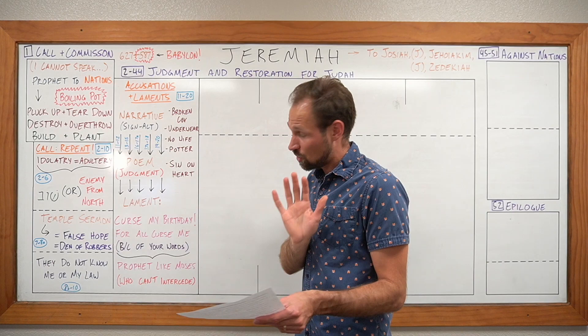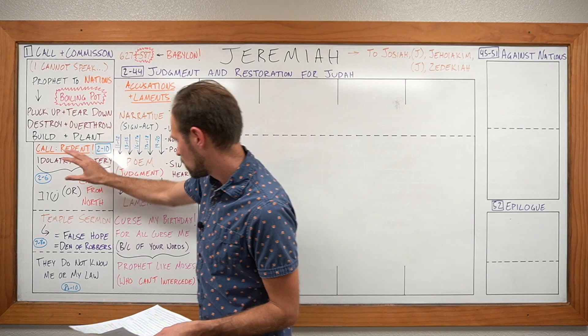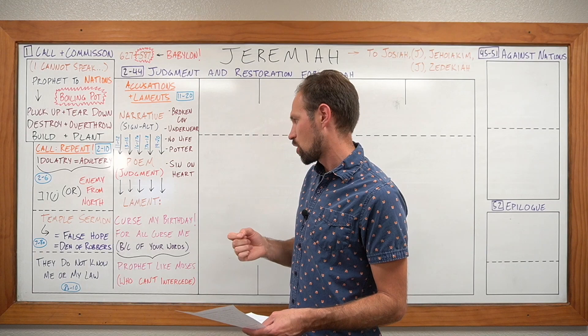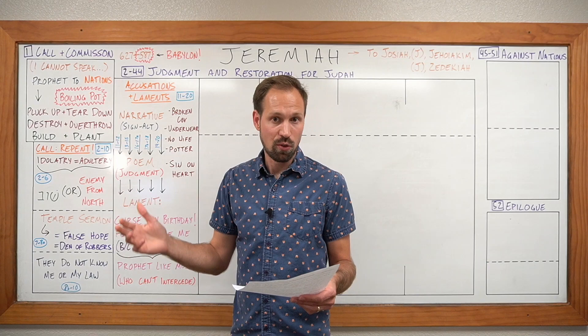In chapters two through ten, we're still in stage one. These chapters come to us in three blocks: two to six, chapter seven, and then eight through ten. One of the clues to this structural division is oracle introductory markers or formulas.